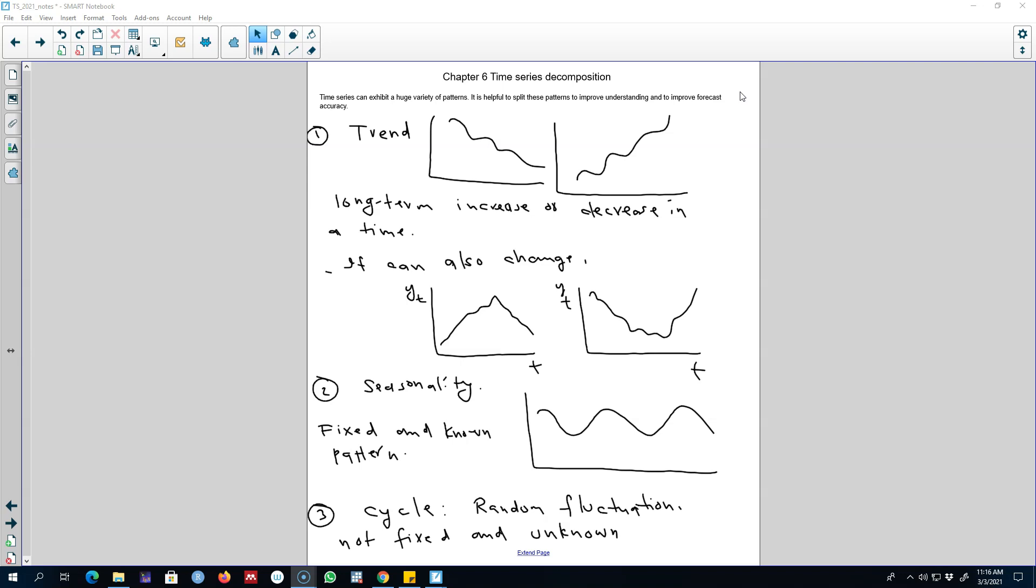The first component that we talked about was the trend component, which was a long-term increase or decrease in a time series, and we saw that a time series may exhibit increase or decrease over time.